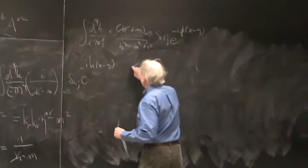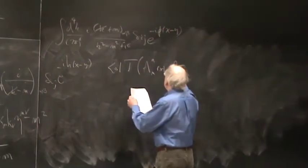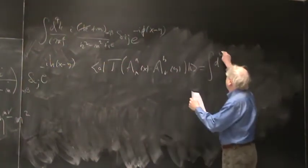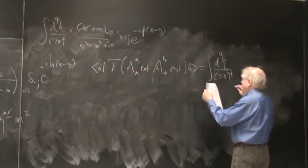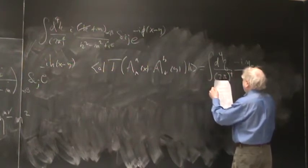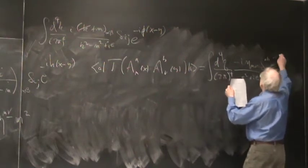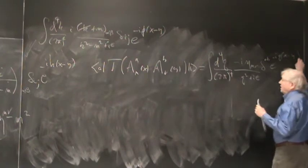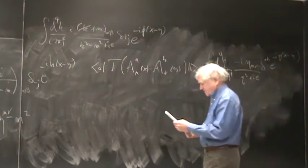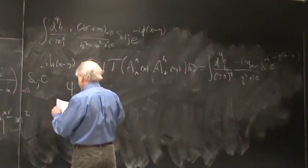All right. Let's look at the gauge boson propagator, and that's the time ordered product A A mu of X, A B nu of Y, and as we'll see on Monday, we can eventually get this to look like minus i g mu nu over q squared plus i epsilon delta AB, e to the minus iq dot x minus y. And again, it's diagonal in the color or flavor.